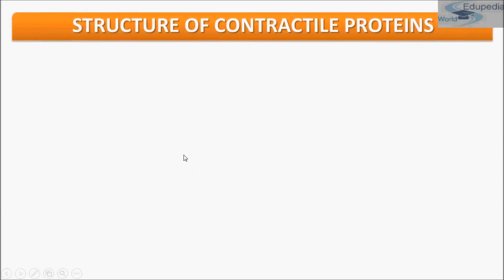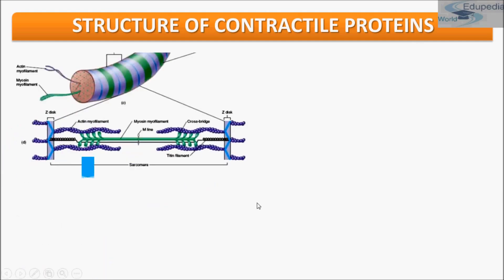Hello students, my name is Neerati Seth and thanks for watching Edopedia word videos. My topic for the presentation is the fourth section of the chapter Movement and Locomotion. In this section, we will be studying about the structure of contractile proteins present in the muscles of the human body. There are two contractile proteins present in muscles: actin and myosin.